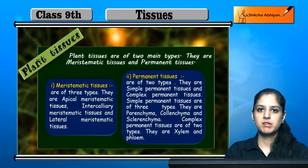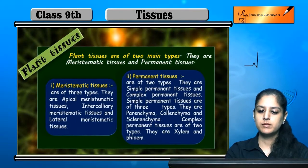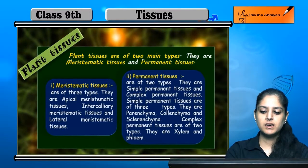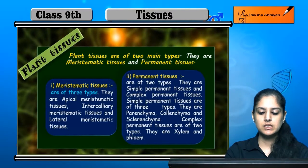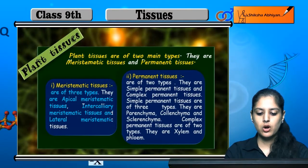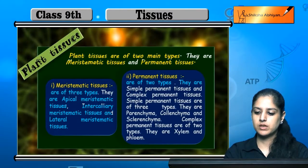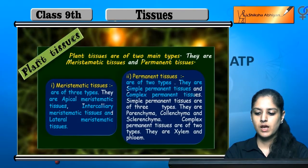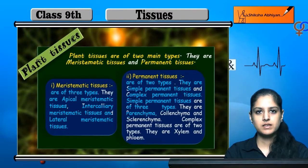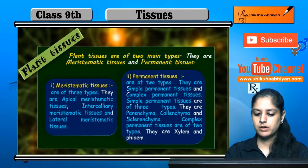Now we will discuss the details of plant tissues. Plant tissues are mainly two types: first is meristematic tissues and the other is permanent tissues. Meristematic tissues are further three types: apical meristematic tissues, intercalary meristematic tissues, and lateral meristematic tissues. The permanent tissues are further two types: simple permanent tissues and complex permanent tissues. The simple permanent tissues are further three types: parenchyma, collenchyma, and sclerenchyma.